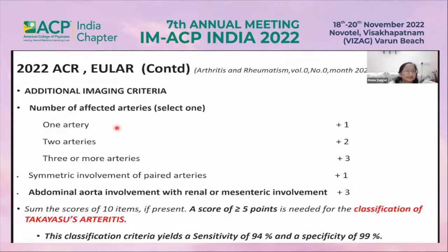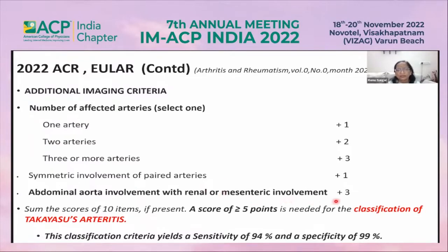Additional imaging criteria assign points based on one, two, or three artery involvement. Symmetric involvement of paired arteries, abdominal aorta involvement, and renal or mesenteric artery involvement carries the maximum of plus three points. A patient scoring five points or more can be classified as having Takayasu arteritis.